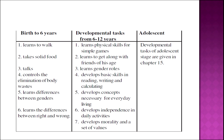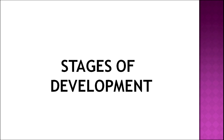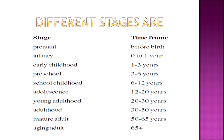We will talk about the developmental tasks of adolescents in the upcoming programs. Let us now know something about the stages of development — how development occurs. All children progress in a definite order through these stages and they all follow similar basic patterns. The stages of development are: prenatal, infancy, early childhood, preschool, school childhood, adolescence, young adulthood, adulthood, mature adult, and aging adult.